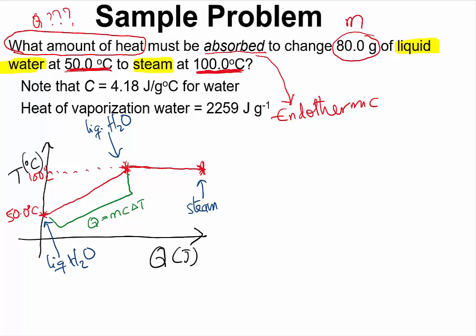That is going to be our Q1. And also we want to calculate the amount of energy required to change the liquid water to steam at the same temperature. We are going to call that Q2. And here we are going to use the mass of the liquid water multiplied by the heat of vaporization of water.